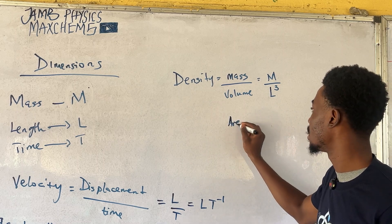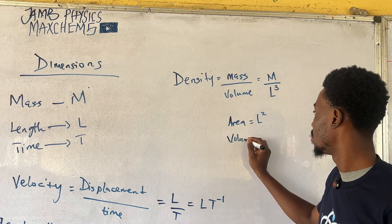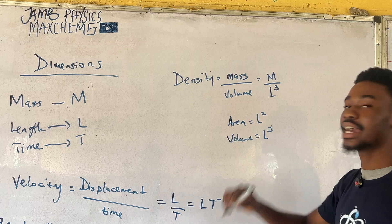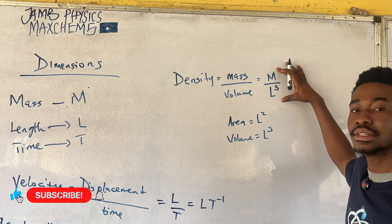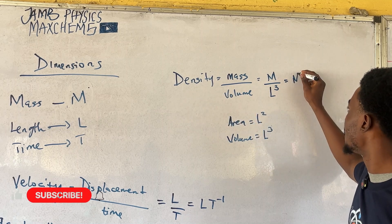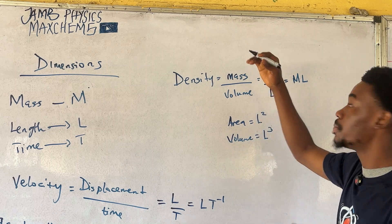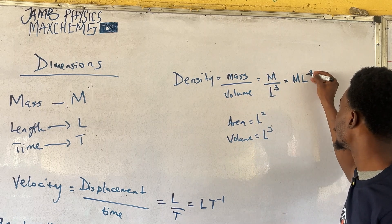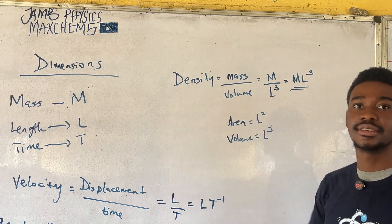So, area would be L square whereas volume would be the dimension of length multiplied three times. So, that's the trick here. So, we have this. So, that means our dimension for density is mass. Remember, when we want to take the L cube up it changes to minus three and we have the dimension for density. Thank you.